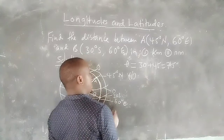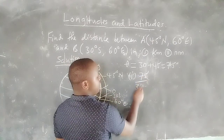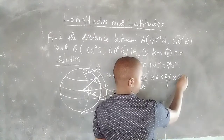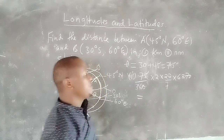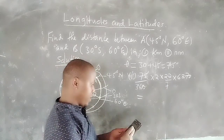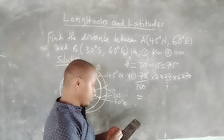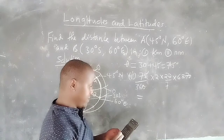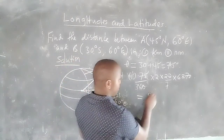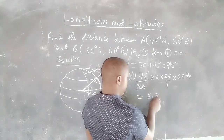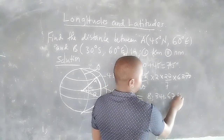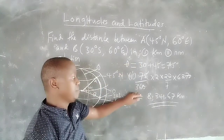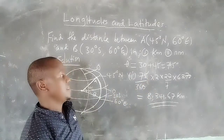For Roman I, the distance in kilometers: (75 ÷ 360) × 2 × (22/7) × 6370. This gives 8341.67 kilometers. So the distance in kilometers is found using the latitude difference divided by 360, multiplied by 2πR, where R is the radius of the earth, 6370 km.